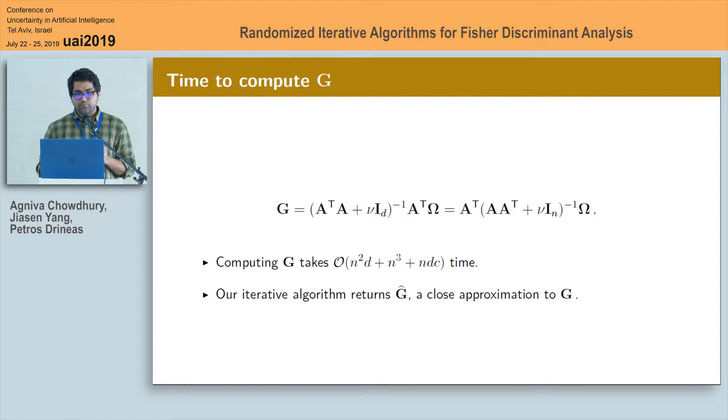Next, the exact computation of G takes time which is of order N squared D and this is very expensive because D is very large in our setting whereas in a much faster way, our iterative framework computes a new matrix G hat which is a very close approximation to G.